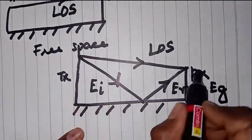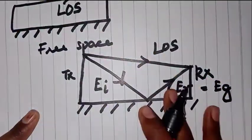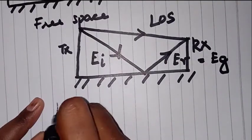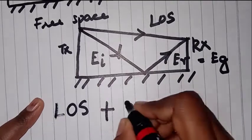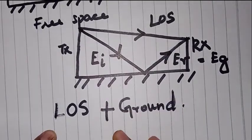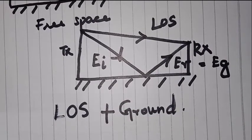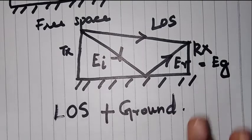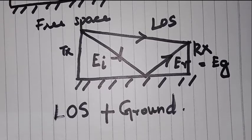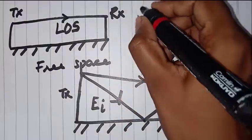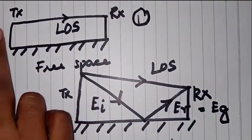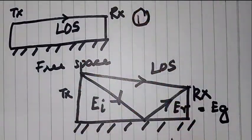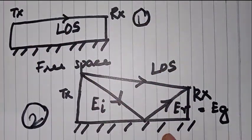That is why it is referred to as the 2-ray ground model. We need to keep in mind that we will have line-of-sight (LOS) and also a ground reflected signal. When scientists start their research, they start from the base: first the free space propagation model with only line-of-sight, and the advanced version — the second version — is the 2-ray ground model, which includes both the line-of-sight and the ground reflected wave.